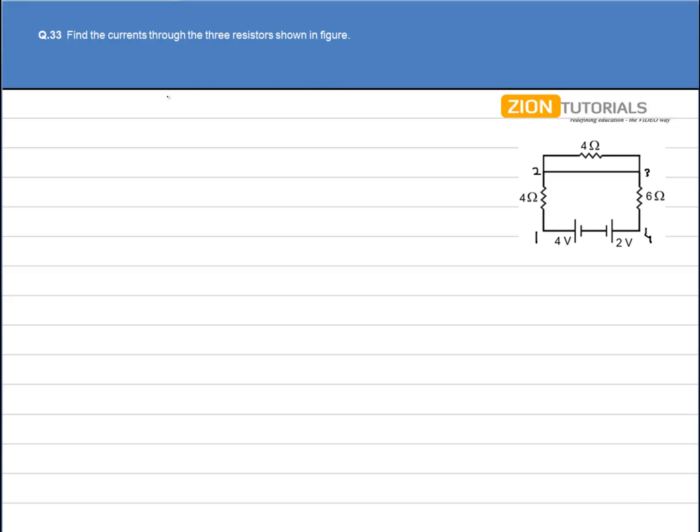Now clearly one thing that 2 and 3 are at the same potential. So obviously if any current flows through 4-ohm resistor and reaches this point, then no current will flow towards 4-ohm resistor because 2 and 3 are at the same potential, so the whole current will flow through this wire.